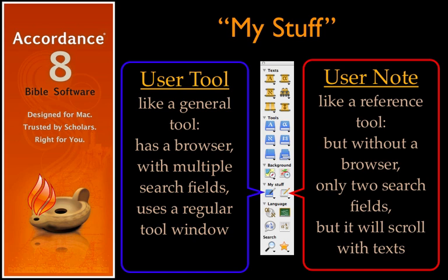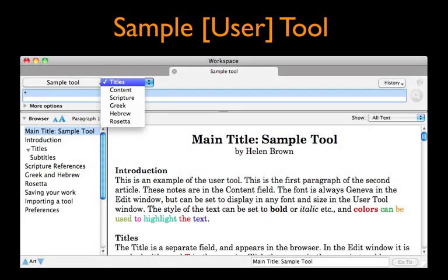The location of these modules is shown here on the resource palette, but you'll find similar icons in the library window. There you can open them, amplify to them, and search them, just like other modules in their respective categories. This podcast covers the basics of making a user tool. Helen Brown has constructed a sample tool for us, included with every copy of Accordance — an excellent way to see just what is possible. You can open it under the user tool icon. This screenshot also shows a user tool's six searchable fields: Titles, Content, Scripture, Greek, Hebrew, and Rosetta, which is used for transliteration.